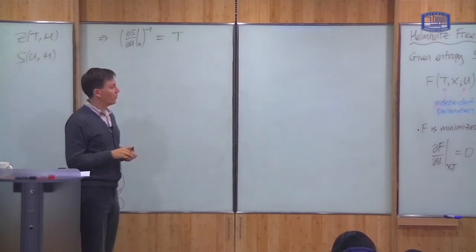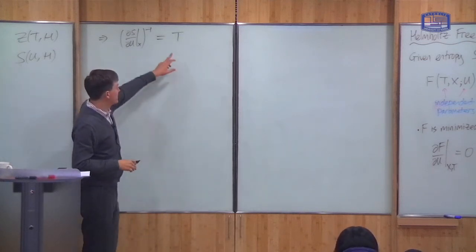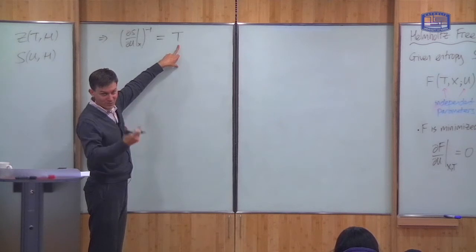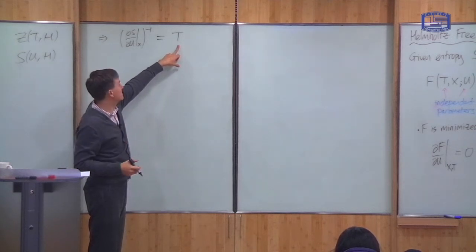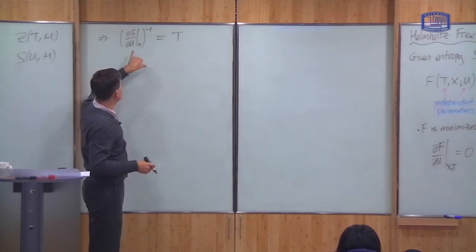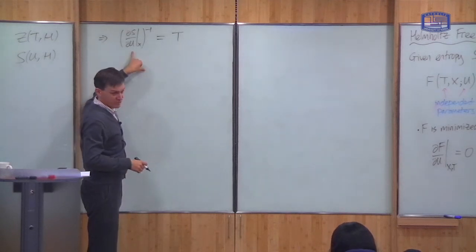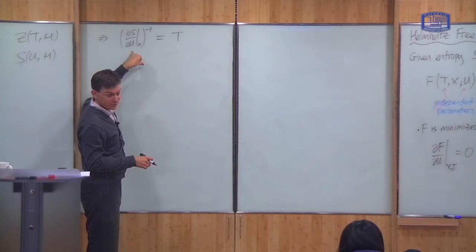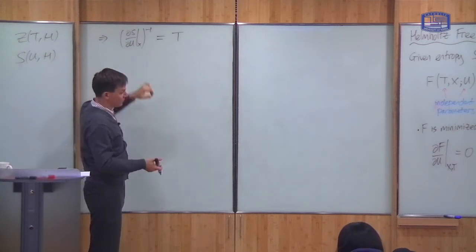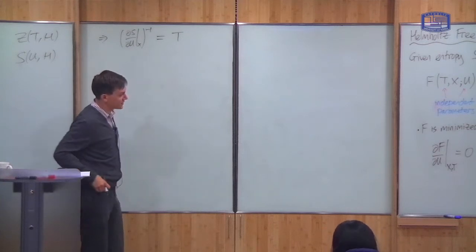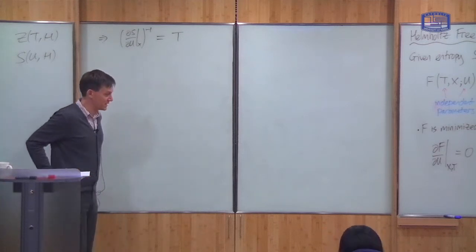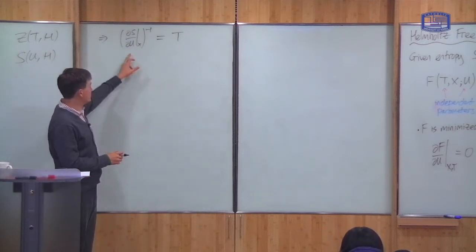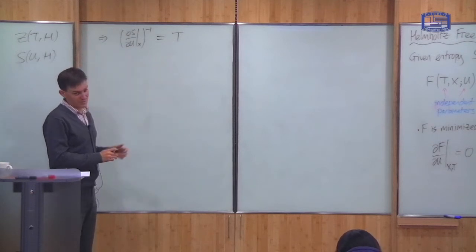What's this? Well, this is the temperature of the reservoir that we imagine the system is connected to, and this is the temperature of the system at energy U. So in other words, the function F is minimized when the two systems are in thermal equilibrium.